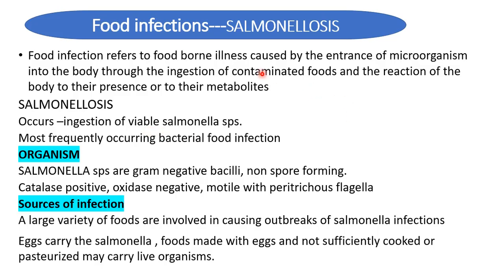Starting with salmonellosis: food infections refer to the entry of microorganisms into the body by ingestion of contaminated foods and the body's reaction to their presence or metabolites. Salmonellosis mainly occurs by ingestion of viable cells of Salmonella in contaminated food. It is the most frequently occurring bacterial food infection, and there are a large number of species and serological types of Salmonella.